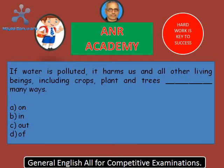Here are your four options: A) on, B) in, C) out, D) off. Your right option is B, 'in'. If water is polluted, it harms us and all other living beings including crops, plants and trees in many ways.